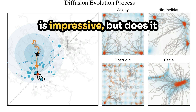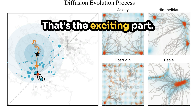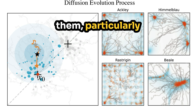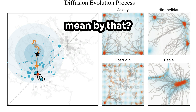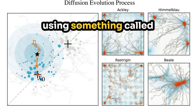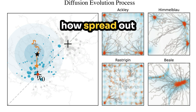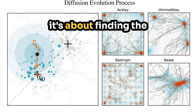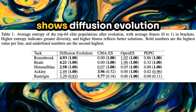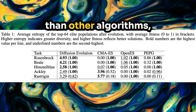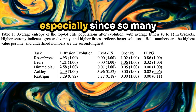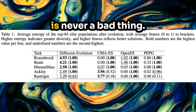They tested Diffusion Evolution against some leading algorithms and found it often outperformed them, particularly when finding a variety of diverse solutions — meaning multiple, equally good answers to the same problem. They measured this using something called Shannon entropy, which quantifies how spread out the solutions are. Table 1 in the paper shows Diffusion Evolution consistently achieving higher entropy scores than other algorithms, meaning it finds a wider range of solutions, especially for tricky problems with multiple good answers.